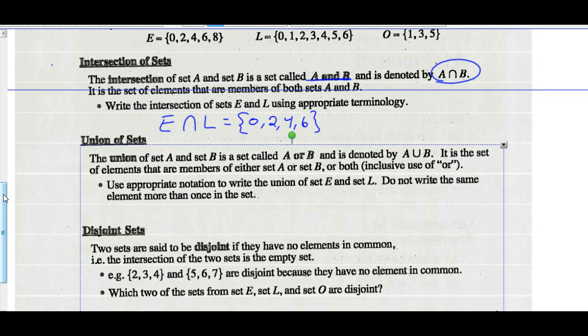The union of sets A and B is called A or B, denoted by A union B. It is the set of elements that are members of either set A or set B, or both. That's the inclusive use of the word 'or'.